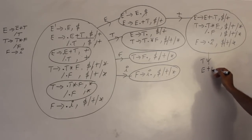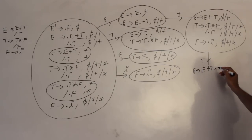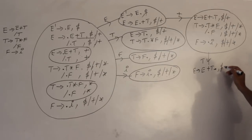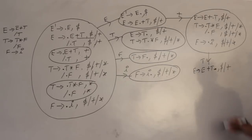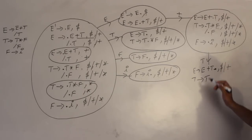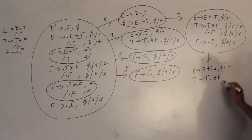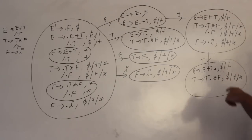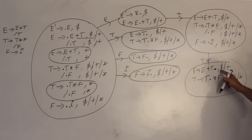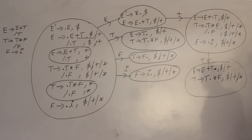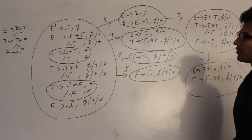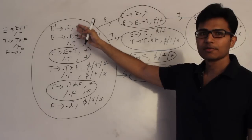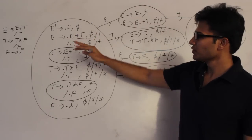On capital T we get E derives E plus T dot comma dollar or plus as a final item, and T derives T dot star F with look-aheads dollar, plus, and star. It looks like a reduce-shift conflict, but the reduce is placed under dollar and plus and the shift under star, so there is no conflict. Whenever you would add a production a second time, just add the look-aheads instead.